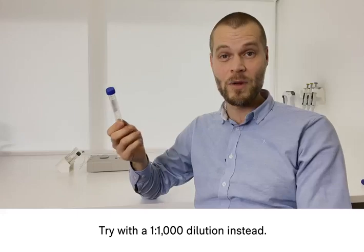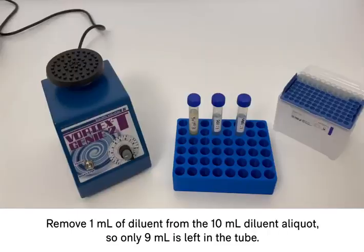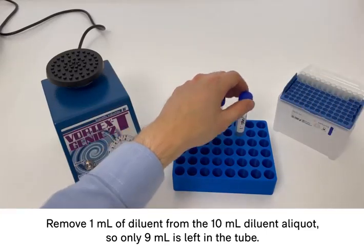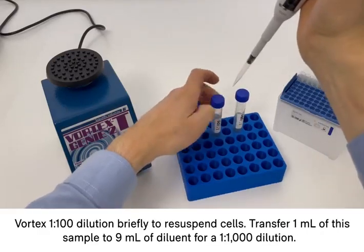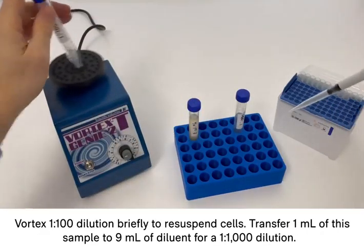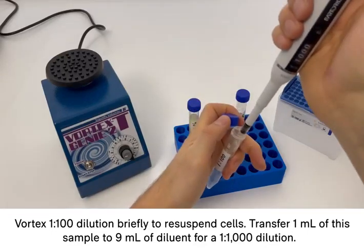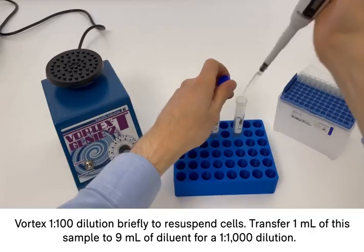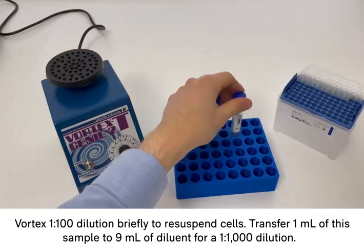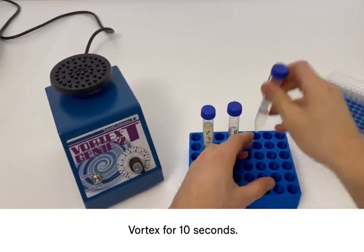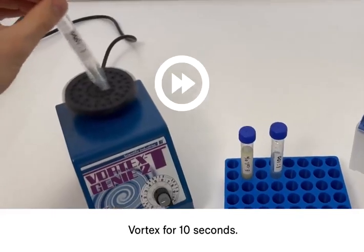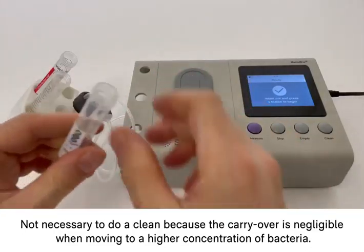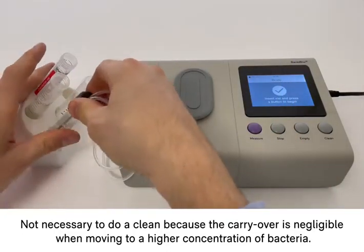Let's see what happens if we prepare a 1 to 1,000 dilution instead. To do a 1 to 1,000 dilution, I first remove 1 mL of the diluent so I only have 9 mL in the tube. Then I vortex the 1 to 100 tube briefly to resuspend cells and then I transfer 1 mL of this sample to the 9 mL of diluent. That gives me the 1 to 1,000 dilution. Finally, I vortex this sample for 10 seconds.